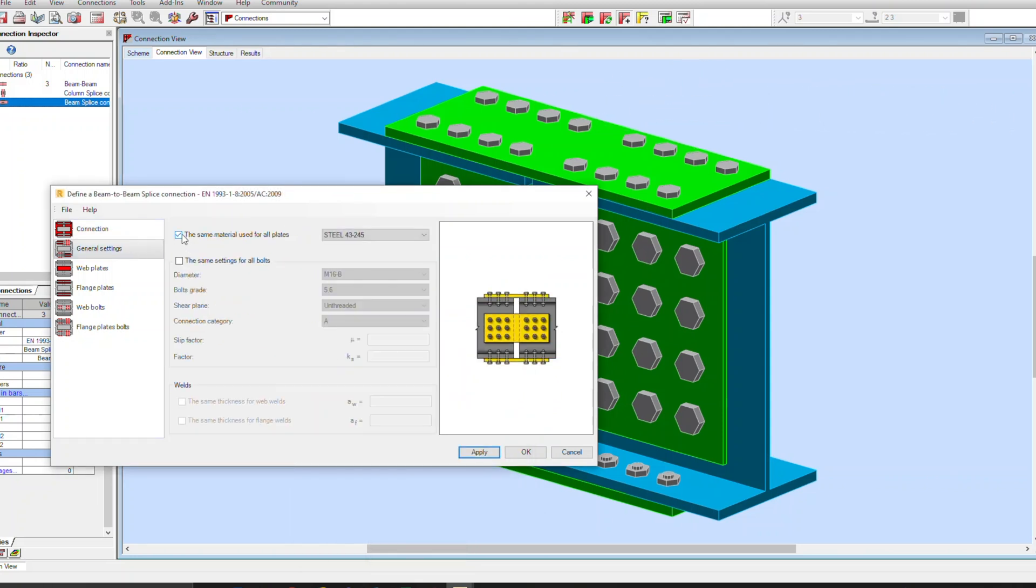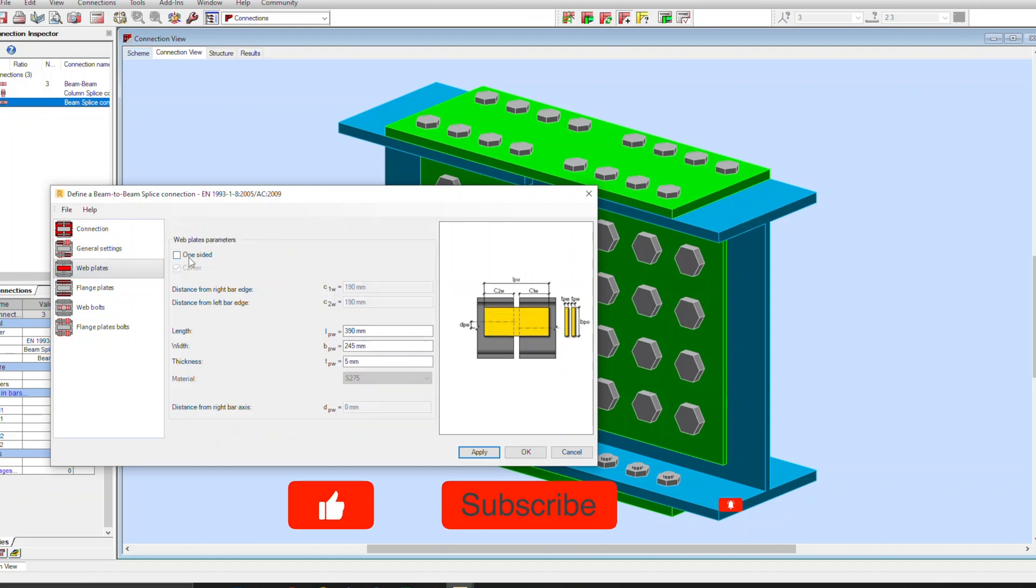So first off I'm just going to give a brief introduction into bolted beam splice connections. So why do we need them? Well the main reason is probably for transportation due to site requirements. A lorry can only carry a certain length of beam. So if your beam is say 16m long but the lorry can only carry a 10m length beam, you'll want to split the beam into two.